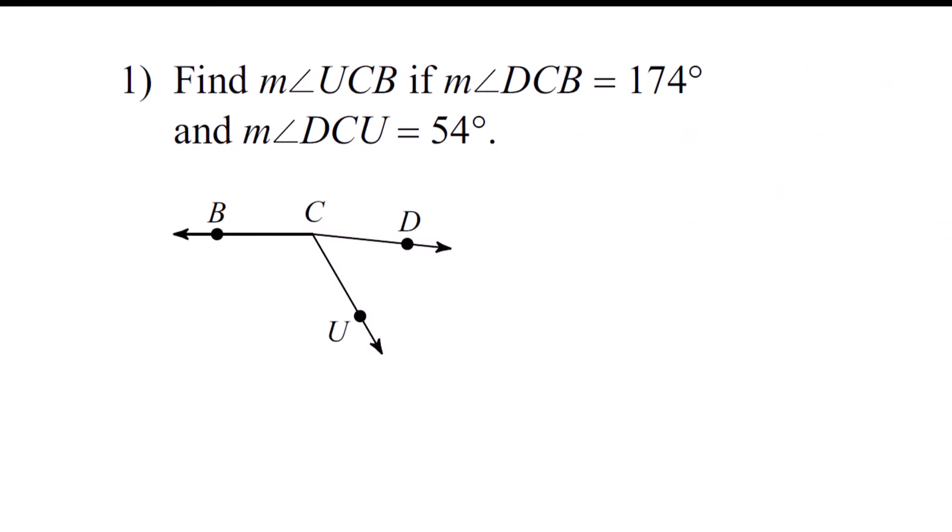In the beginning of geometry you're going to see problems like this, and it's going to feel like you are trying to do a whole different language because, you know what, yeah you kind of are. Find the measure of angle UCB if the measure of DCB equals 174 and the measure of angle DCU equals 54. So first thing I always do is mark up my diagrams, and I have colored pencils and highlighters all the time.